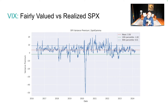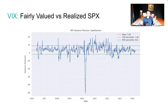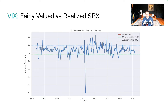After the COVID crash, realized volatility was very high, but the Fed came out and said they had your back. Implied volatility collapsed and the VIX dropped very sharply. So again, this tells us that the VIX is kind of behaving normally.